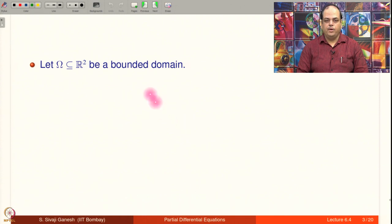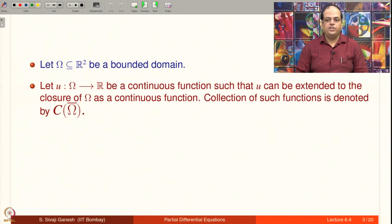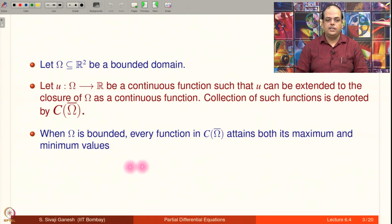Let omega be a bounded domain inside R². Let u be a continuous function defined on omega such that it can be extended to the closure of omega as a continuous function — meaning u makes sense for points on the boundary, and in a continuous manner. The collection of such functions is denoted by C(ω̄). When omega is bounded, every function in C(ω̄) attains both its maximum and minimum values, because ω̄ is compact. Somewhere in ω̄, both maximum and minimum values are definitely attained.